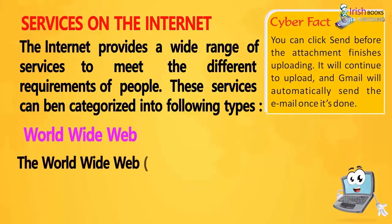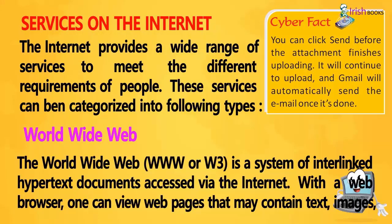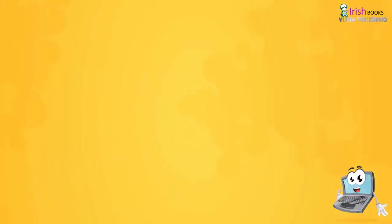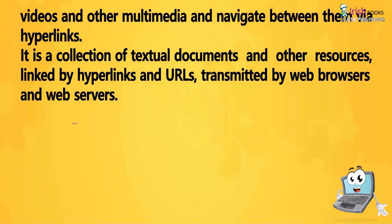World Wide Web: The World Wide Web (www or W3) is a system of interlinked hypertext documents accessed via the Internet. With a web browser, one can view web pages that may contain text, images, videos, and other multimedia, and navigate between them via hyperlinks. It is a collection of textual documents and other resources linked by hyperlinks and URLs, transmitted by web browsers and web servers.